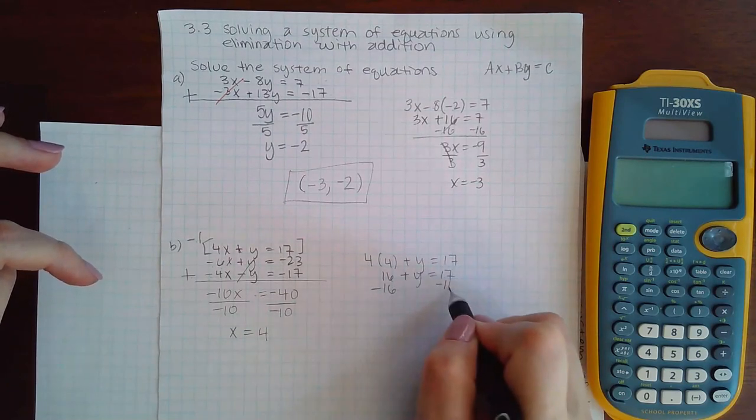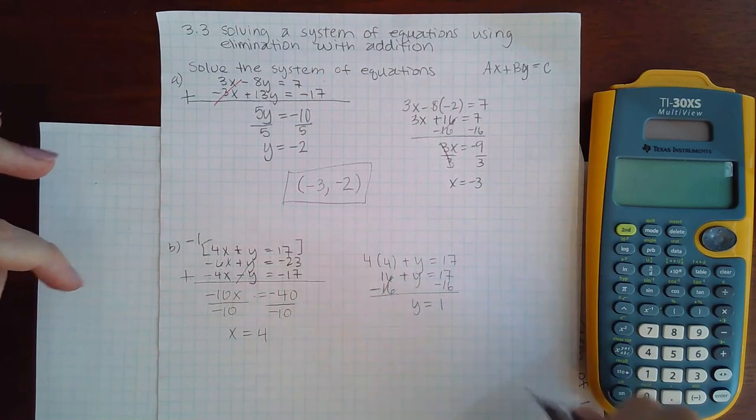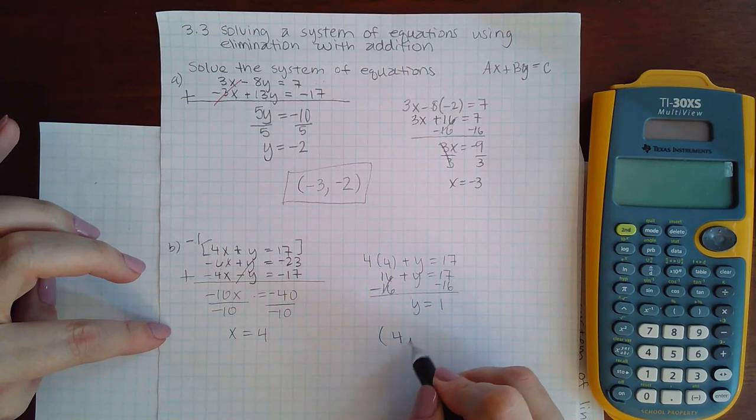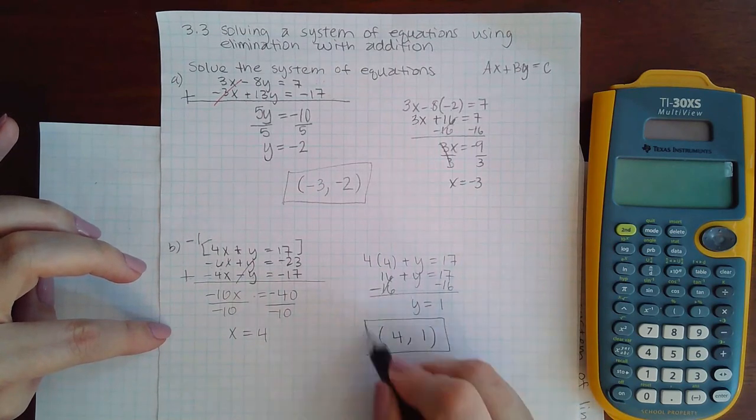Subtracting 16 from both sides gives y = 1. The coordinates are: 4 for x, 1 for y, and we're done.